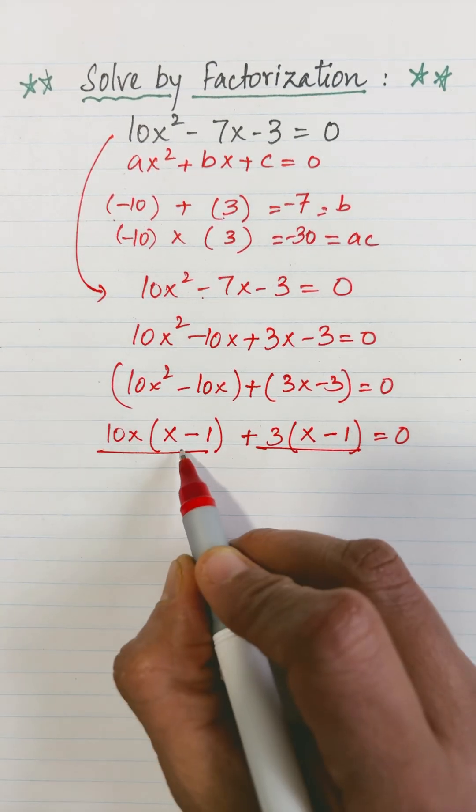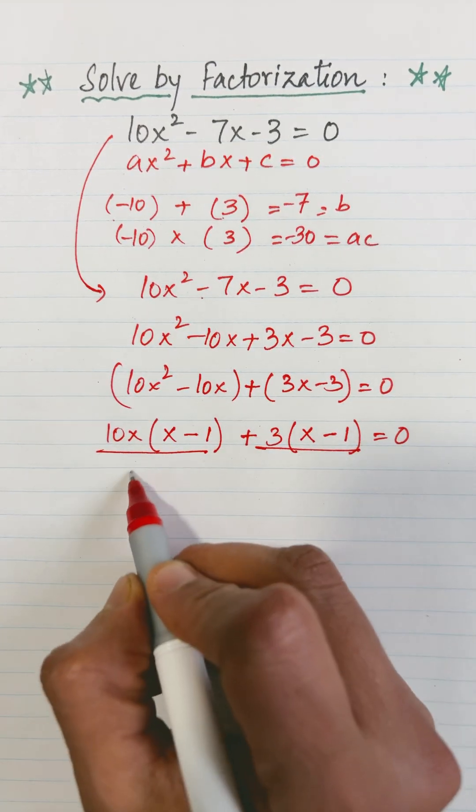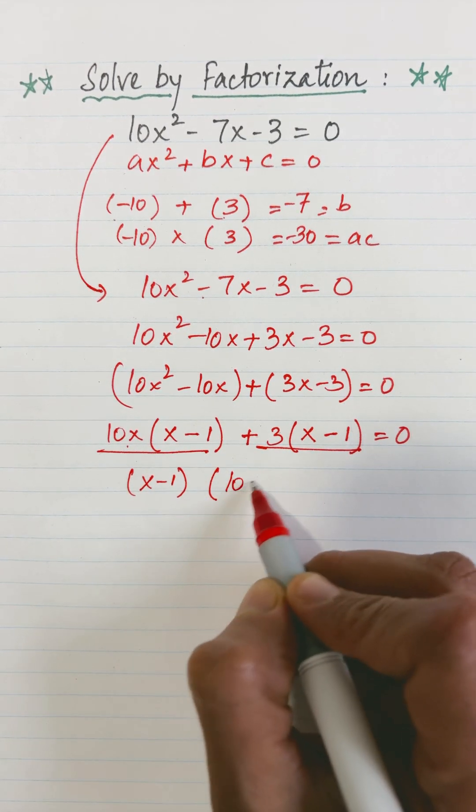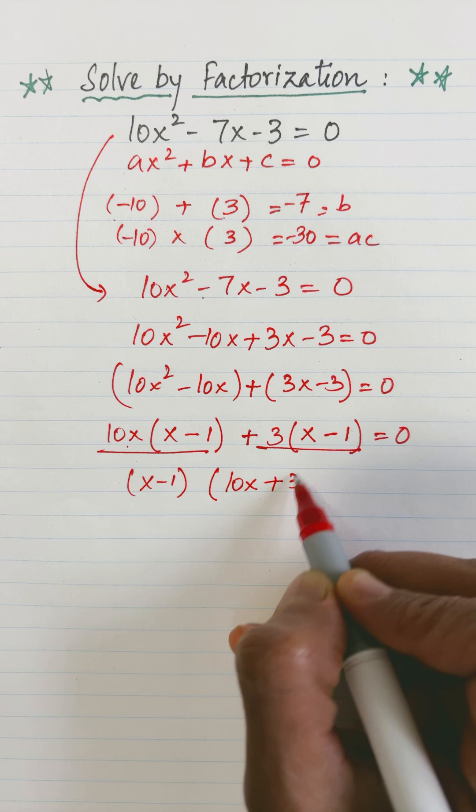From these terms I can clearly see (x - 1) is the common bracket or common factor. Take it out: 10x is left from here, plus 3 is left from here.